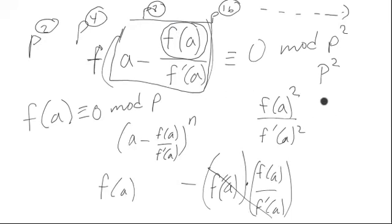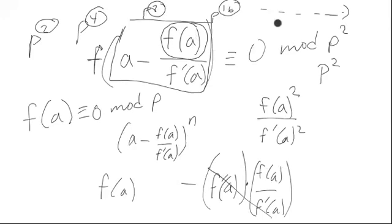So we do get an extension, and this works inductively: starting from a solution mod p, we get a solution mod p², then mod p⁴, and so forth, with the exponents multiplying by two each time. That completes an intuitive sketch of how a proof of Hensel's Lemma goes, based upon Newton's method, which is very handy here.